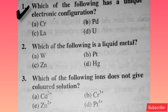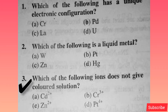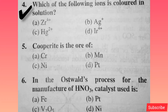Which of the following has a unique electronic configuration? Option B is right. Which of the following is a liquid metal? Option D is correct. Which of the following ion does not give colored solution? Option C is correct. Which of the following ions is colored in solution? Option D is right.